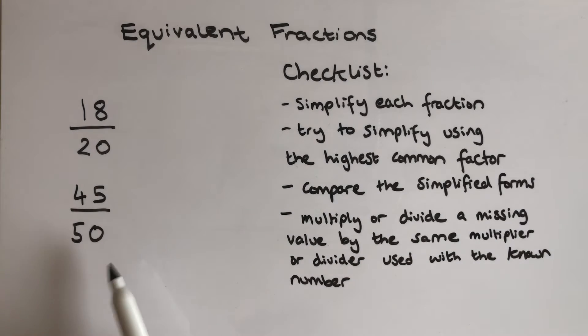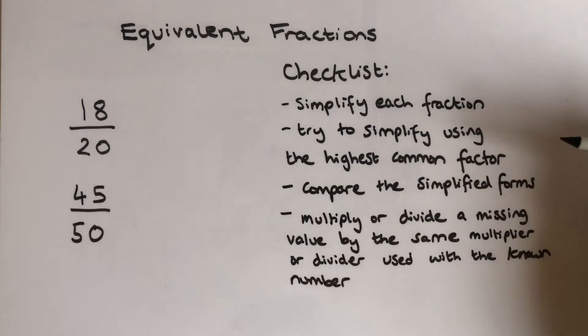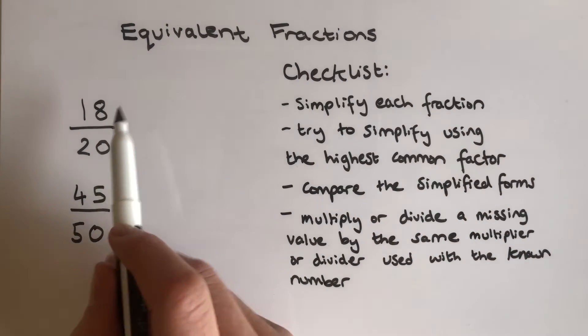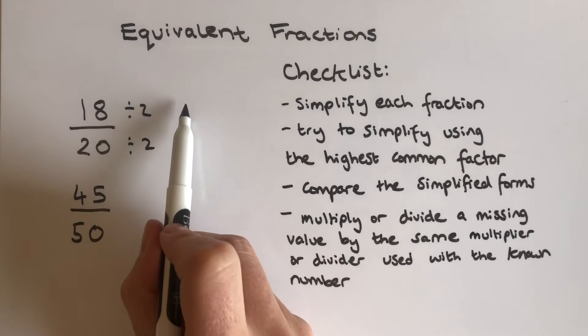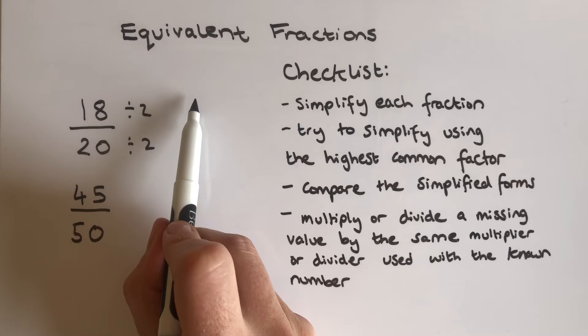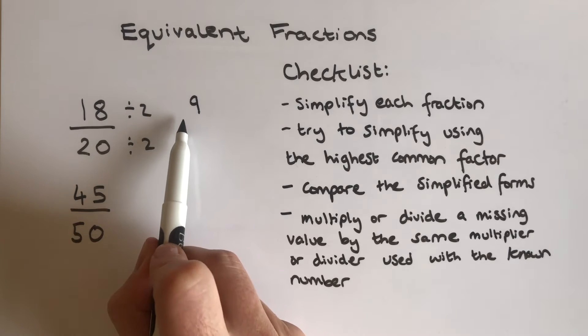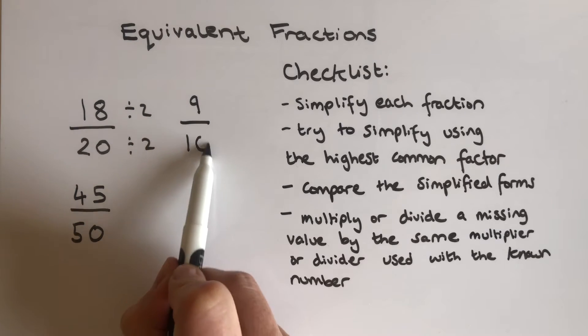So I've got two fractions, I'd like to know, are they the same? Are they equivalent? So it says I need to simplify each fraction and try to use the highest common factor. Now the highest common factor for 18 and 20 is 2. So I'm going to divide top and bottom numerator and denominator by 2, so that I get 9 over 10.